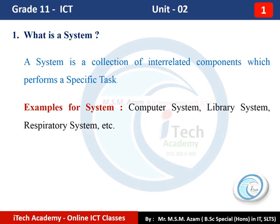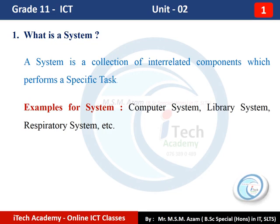We will take an example and discuss the definition of the system. Take computer as a system. We can identify a computer system as a collection of interrelated components — hardware, software, firmware, and liveware. These components are interrelated to perform a specific task: processing data into meaningful information. So a system is a collection of interrelated components which performs a specific task.